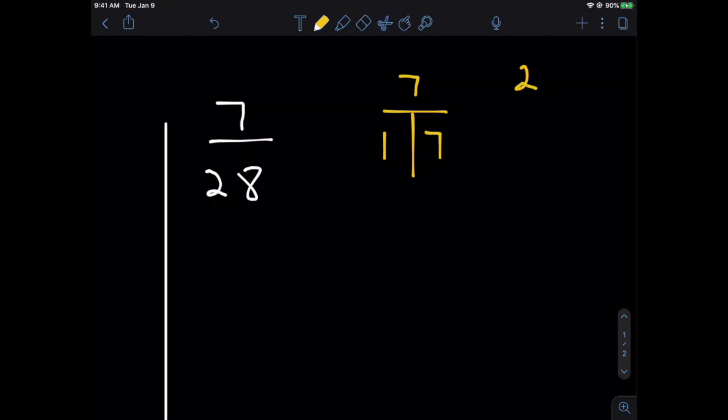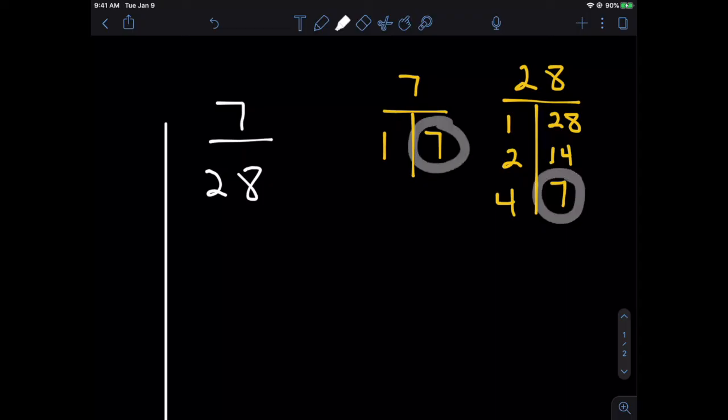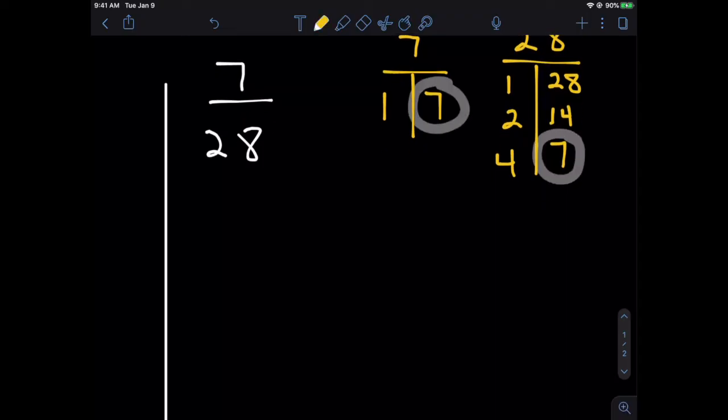28 is going to be a little bit more involved, but not by much. Again, 28 over the t-table. 28 divided by 1 is equal to 28. I can divide it by 2 because it's even. 28 divided by 2 is 14. Can't divide by 3, but I can divide it by 4. 28 divided by 4 is 7. And if I keep going here, I'm just going to get to my repeat 7.